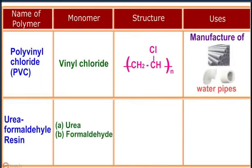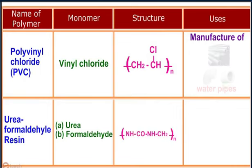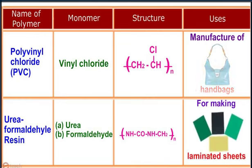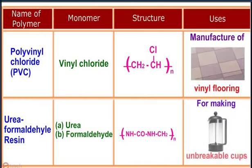Urea formaldehyde resin: the monomers are urea and formaldehyde. It is used for making unbreakable cups and laminated sheets.